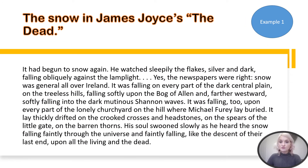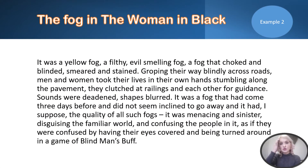I've got some examples of paragraphs where writers have written about the weather. I'm not going to read it to you — if you just pause here, you can read through James Joyce's description of the snow. Here's another example from The Woman in Black; I really like this description of the fog — I think it's described really effectively here. Again, pause this slide to have a read through that and have a think about what's effective about it. What could we borrow from the description of the fog?